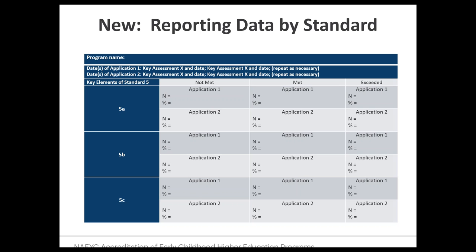There is a sample data table in the self-study report, but there is no required format — it does not need to look exactly like the sample. The sample uses columns labeled 'not met,' 'met,' and 'exceeded,' but there is no rule on how many columns a rubric must have and no set format for the data table. This is provided as one example of how programs could think about reporting data by standard. The key information in the table header is the dates of application and which key assessment is being reported.